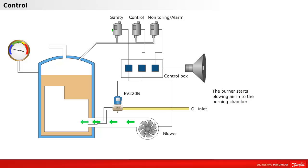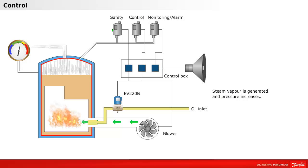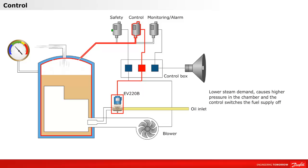Let's look at an example of a typical control function application. The burner starts blowing air into the burning chamber. Oil is sprayed into the chamber and is ignited. The heat increases and steam is generated. Steam vapor is generated and the pressure increases. The lower steam demand causes higher pressure in the chamber and the control switches the fuel supply off.